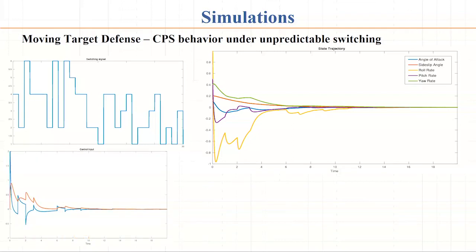Here you can see what I'm doing: unpredictable switching. The attacker has not yet attacked, but I am switching among different controllers. This is the switching signal, and you can see that eventually everything works pretty well. This is the attack-free scenario.